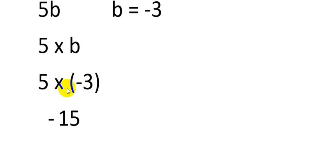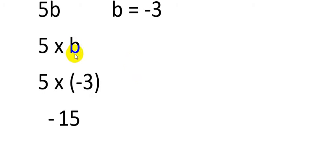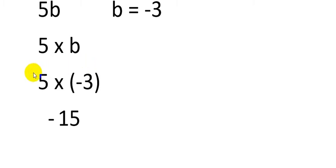We need to take the product of the signs as well. Plus multiplied by minus gives minus. I have given all four possible sign multiplications in my previous video — if you are not clear, please watch that first video on algebraic expressions. So as mentioned, plus multiply by minus is minus, and 5 multiply by 3 is 15, giving minus 15.